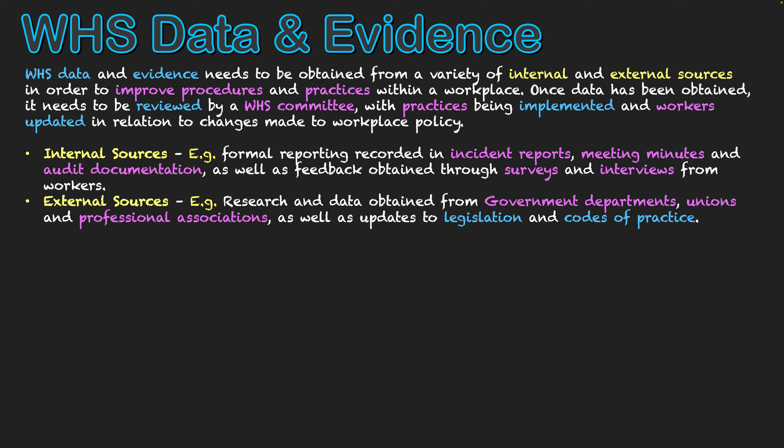Then we have the external sources. This might be research and data obtained from government departments, unions, or professional associations — people constantly looking at safety at potentially an industry level — and getting updates from them based on their research and data they've accrued over time. This also includes updates in relation to legislation and codes of practice. Government departments would include things such as SafeWork New South Wales as an external source. Those external sources of data that impact our workplaces are a great source of information we should refer to in order to keep our data up to date as well.